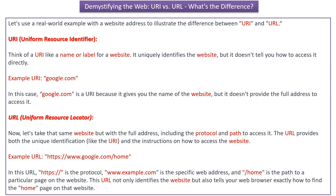Let us use a real-world example with a website address to illustrate the difference between URI and URL. URI is nothing but Uniform Resource Identifier. We can think of URI like a name or label for a website, and URI uniquely identifies the website. But URI does not tell you how to access the website directly. Here you can see the example of URI: google.com. In this case, google.com is the URI because it gives you the name of the website, but it does not provide the full address to access the website.